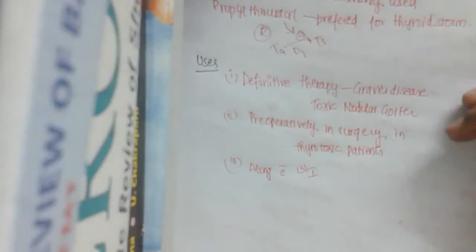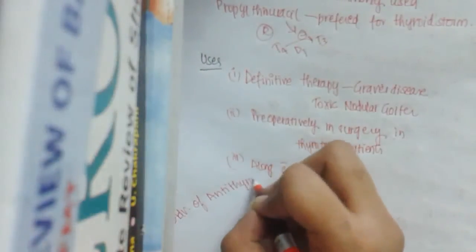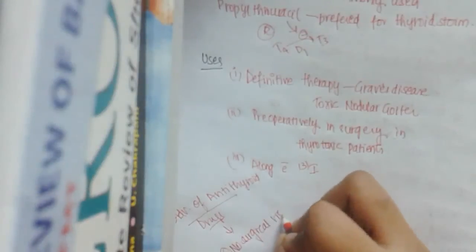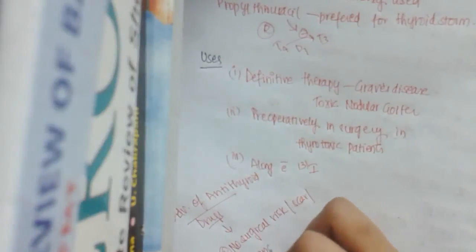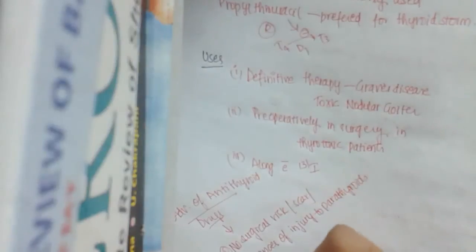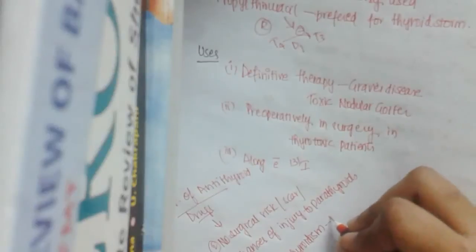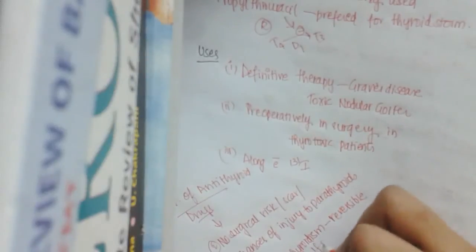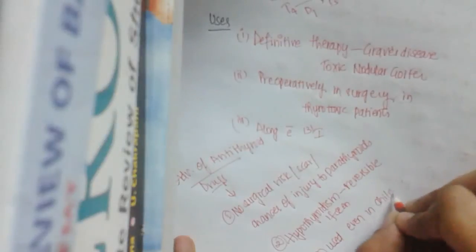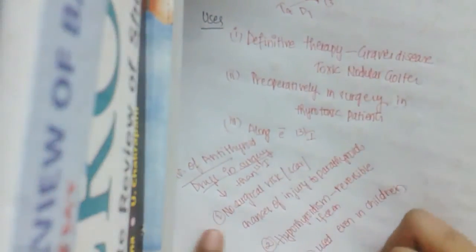The advantages of antithyroid drugs compared to iodine-131 include: no surgical risk, no scar, and no chance of injury to the parathyroids — which are present superior and inferior to the thyroid. Second, even if hypothyroidism is seen it is reversible. Third, they can be used even in children.